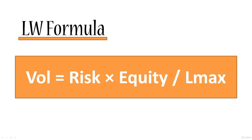As your equity grows, the volume will grow proportionately — that's what the Larry Williams method is all about. If LMAX is constant at $200 per contract and your risk is constant at 5%, then your volume will be directly proportionate to your equity. This is what will help you achieve exponential growth of your balance.